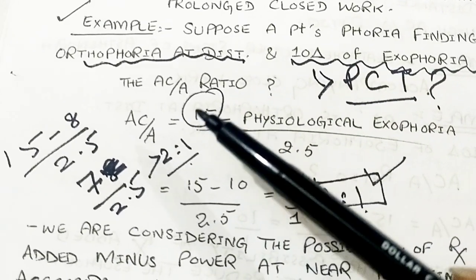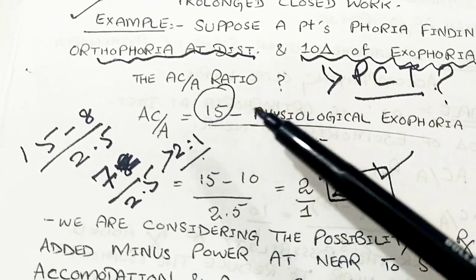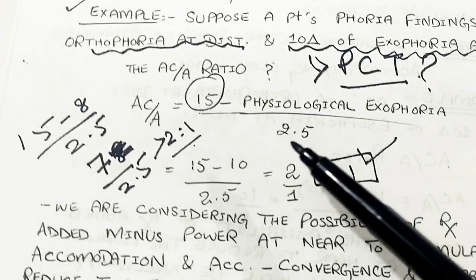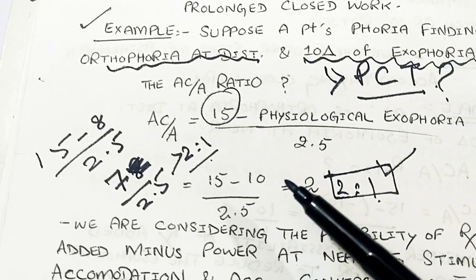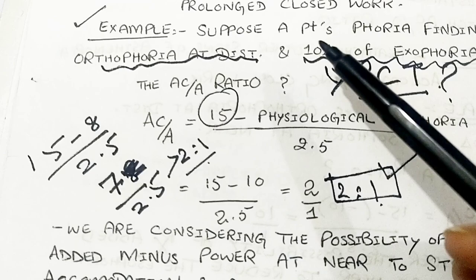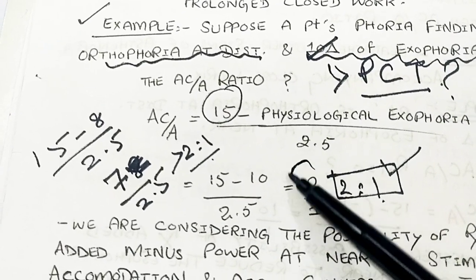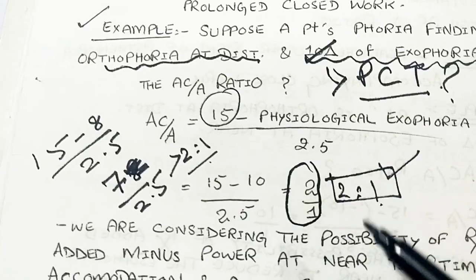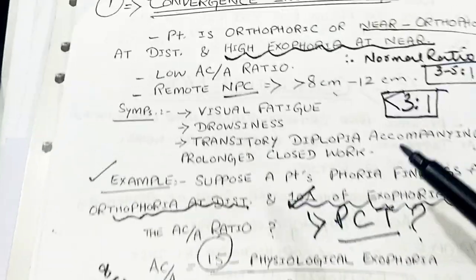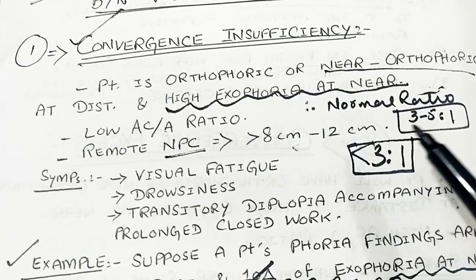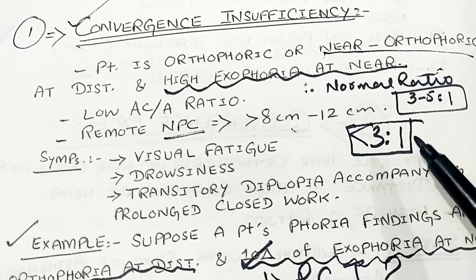Then we find out the AC/A ratio. The formula is: 15 (constant) minus physiological exophoria, divided by 2.5. So: 15 minus 10 prism diopters, divided by 2.5, gives an AC/A ratio of 2 to 1. That is less than the normal 3 to 5 to 1 ratio.